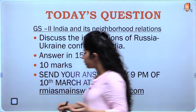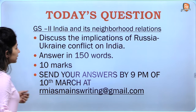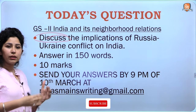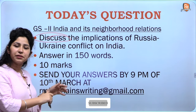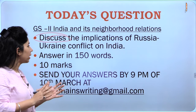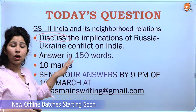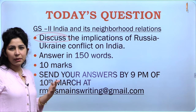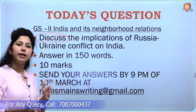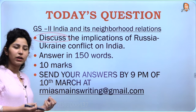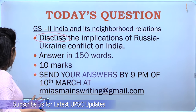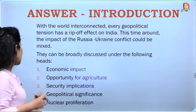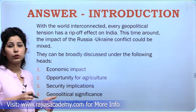Let us see what could be the introduction for this. Since it is a 'discuss' directive, you have to talk about all parts of it — the positive implications and the negative implications as well. So discuss the implications of the Russia-Ukraine conflict on India specifically. We will start by building an introduction, generally talking about what is given in the question. Since the word limit is just 150, we will keep our introductions and explanations very short but we will have to include everything.